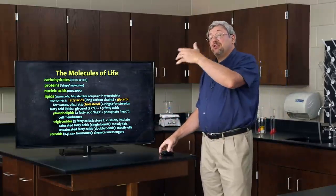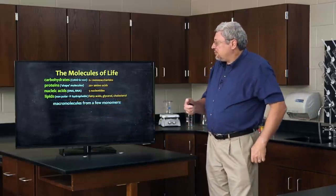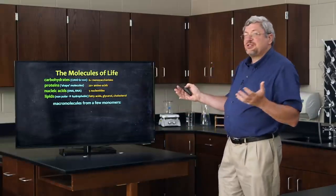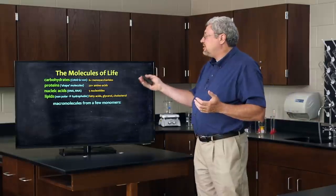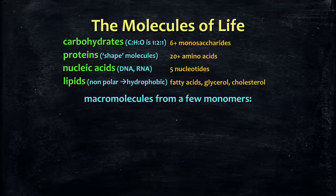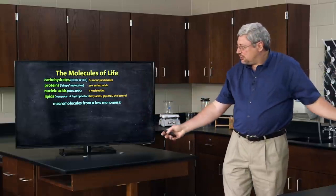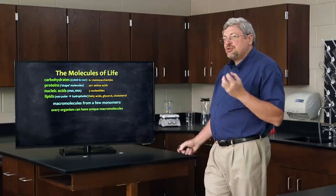So there we have the major types of macromolecules of life: carbohydrates, proteins, nucleic acids, and lipids. They're made from very few monomers — only about six monosaccharides produce all the carbohydrates, only 20 amino acids produce all the proteins, only five nucleotides produce the nucleic acids, and a few fatty acids, glycerol, and cholesterol produce all the lipids. In just a few dozen monomers at most, you can produce all the macromolecules of life. That is a really cool and interesting design.